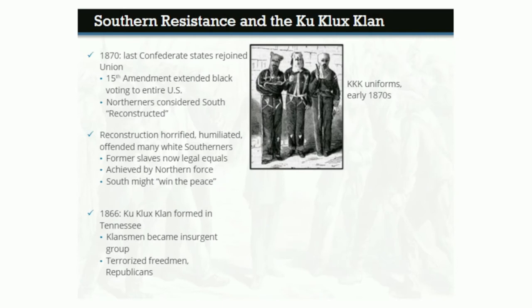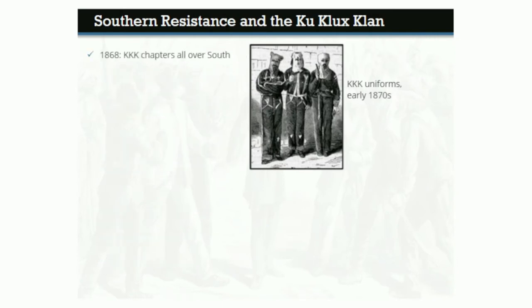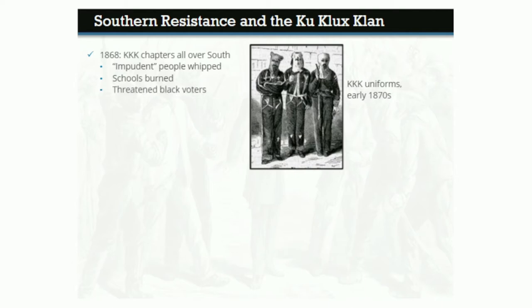By the time Congressional Reconstruction took full force in 1868, there were independent chapters of the KKK all over the South. Their tactics were brutal and terrifying. Klan members whipped black people who they considered rude or impudent to whites. They threatened teachers and burned black schools to intimidate those who sought an education, and most of all, they threatened black voters during election seasons.